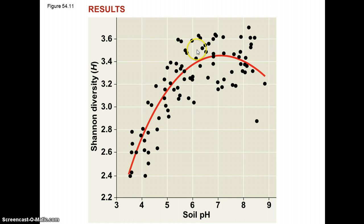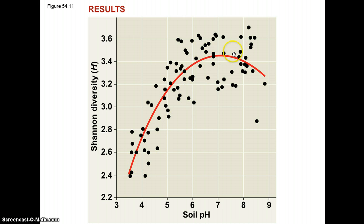Here's an example with soil bacteria, looking at the abiotic conditions of the soil and how the pH can affect diversity. When the soil gets too acidic, diversity decreases, whereas between six and eight is the ideal pH for these microbes in the soil to reach maximum diversity.